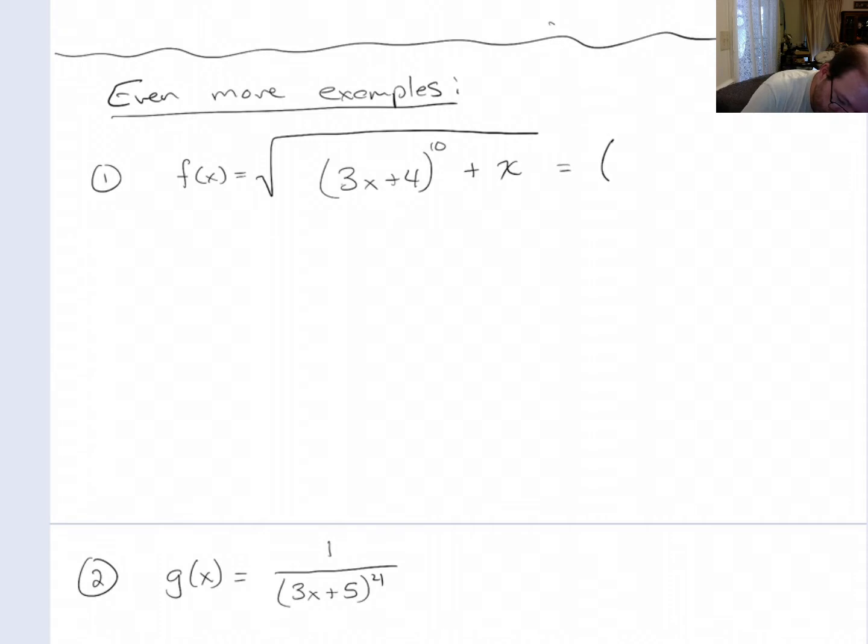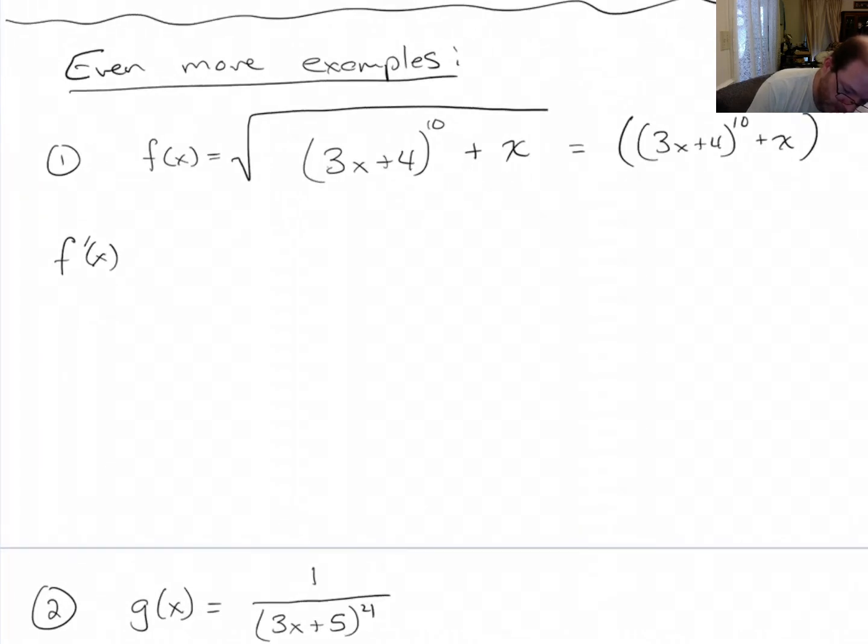Let's rewrite this as (3x + 4) to the tenth plus x to the negative one-half. So f prime is going to be one-half times (3x + 4) to the tenth plus x to the negative one-half.